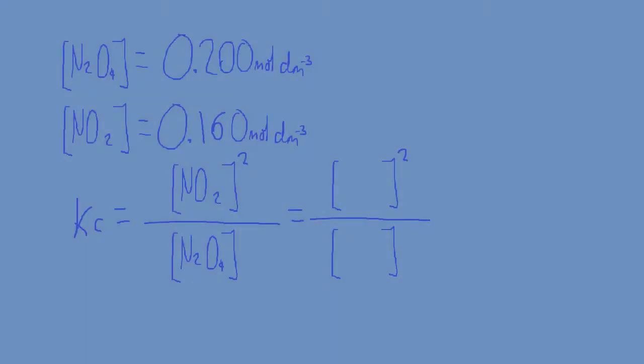Now by this point we have the equilibrium law and both of the concentrations at equilibrium, so we can substitute them into the equilibrium law to yield Kc. In this case it would be 0.160 squared over 0.200, which equals 1.28.